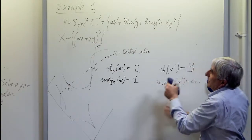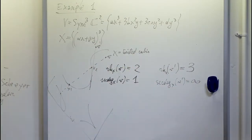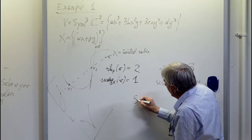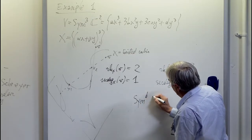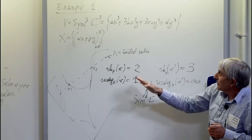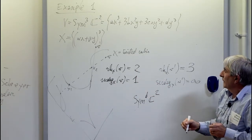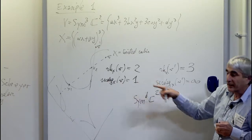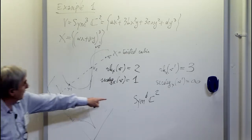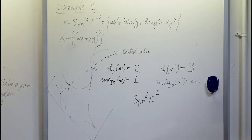This generalizes. For all binary forms, the secant degree is generally 1 for tensors of fixed odd degree D. The distinction between odd and even D makes a difference here.